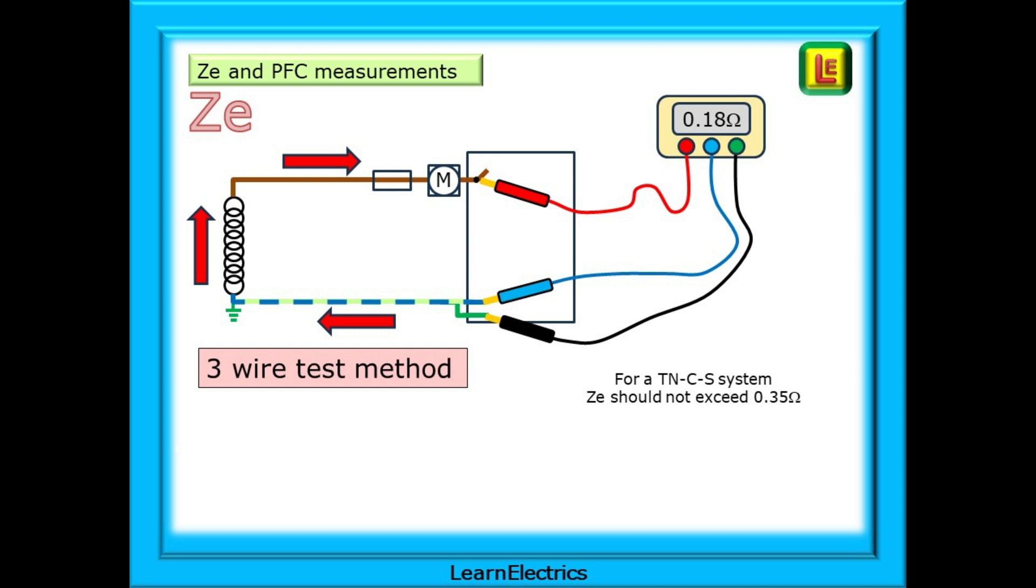With the main switch open and the main earth removed to avoid parallel paths, we can test between the removed earth, the neutral, and the incoming live side of the main switch. This is a three wire test and many meters do it this way - they use all three test leads. The actual test is between the line and earth but the test meter needs the neutral connection before it will start the test. A number will be returned after a few seconds and this should be recorded. The assessor may ask you what this means. In this example here the impedance of the earth fault loop path out of the building and back again is 0.18 ohms and should be recorded as ZE.